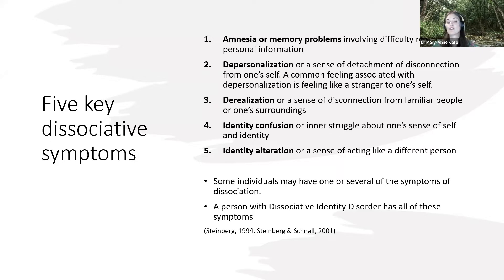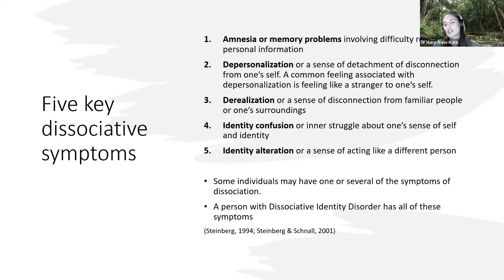Identity confusion is the fourth part — a struggle about who am I, what is my identity, feeling very unsure and having difficulty defining the self. It can also be identity alteration, where there's a sense of feeling like another person or people, or acting like another person or people.